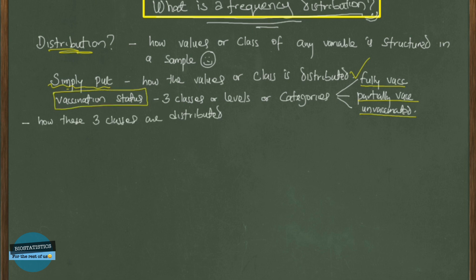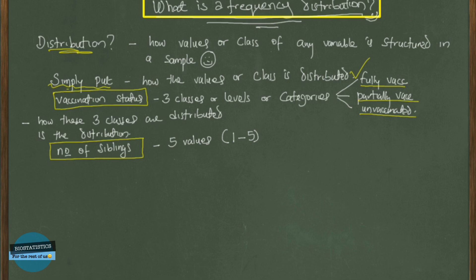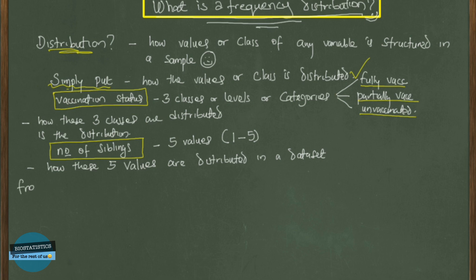Another example is the number of siblings. Number of siblings is a numeric variable, so we're expecting to have values. This particular variable has values of one to five. The distribution of these values is how the five values are distributed in a particular data set or sample, as we'll see as we go along with our examples.